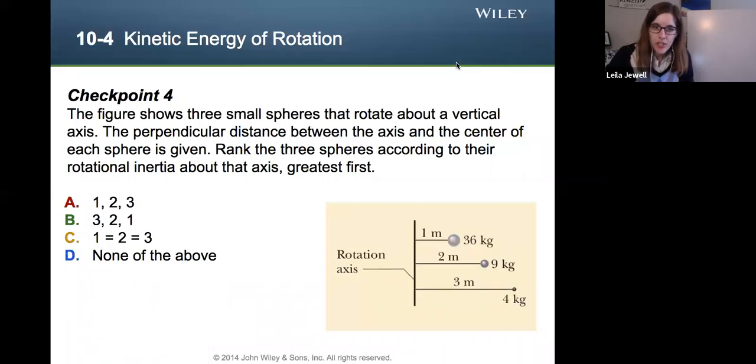So let's look at a checkpoint, checkpoint four. The figure shows three small spheres that rotate about a vertical axis. The perpendicular distance between the axis and the center of each sphere is given. Rank the three spheres according to the rotational inertia about that axis greatest first. I want you to think about this, choose an answer, and then let yourself go on in the video. So make sure to go ahead and hit pause.